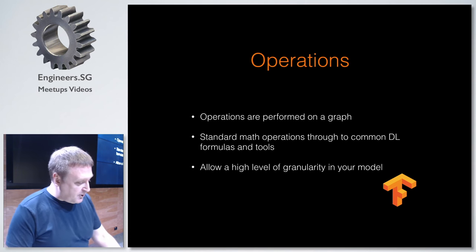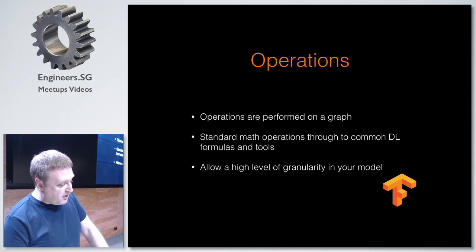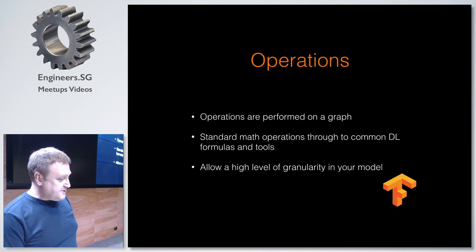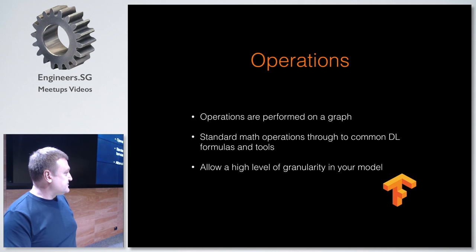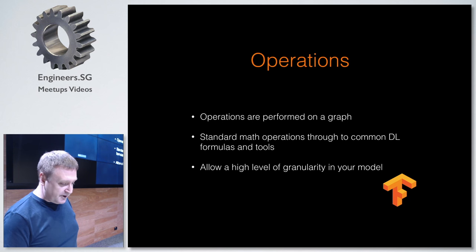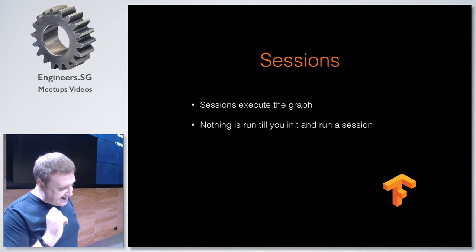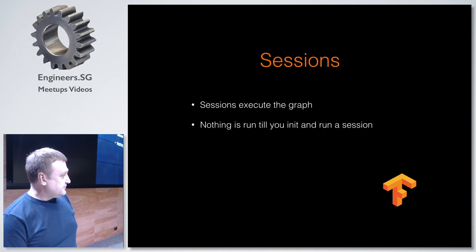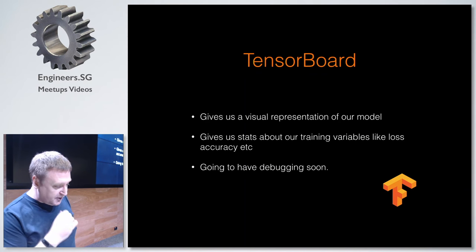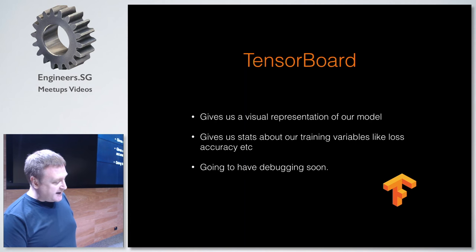Operations are what's performed on the graph — everything from standard math operations to common deep learning formulas. This gives you a high level of granularity to see exactly what's doing what. This is why TensorFlow is favored by researchers: if you're trying to come up with something new, you can't just use pre-made layers. Sessions get executed on the graph — nothing runs until you initialize and run a session. TensorBoard gives a visual representation of the model, with stats like loss and accuracy.